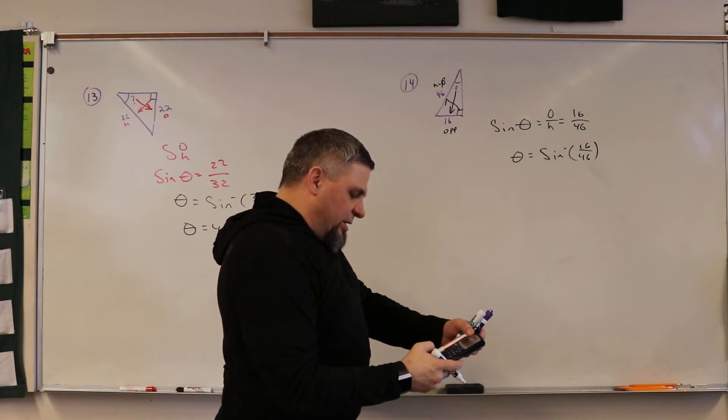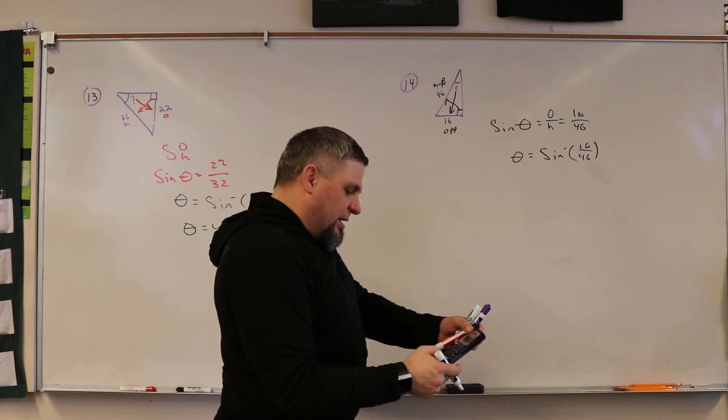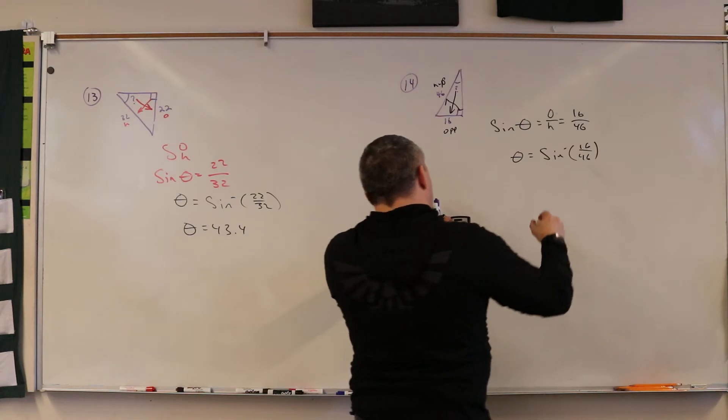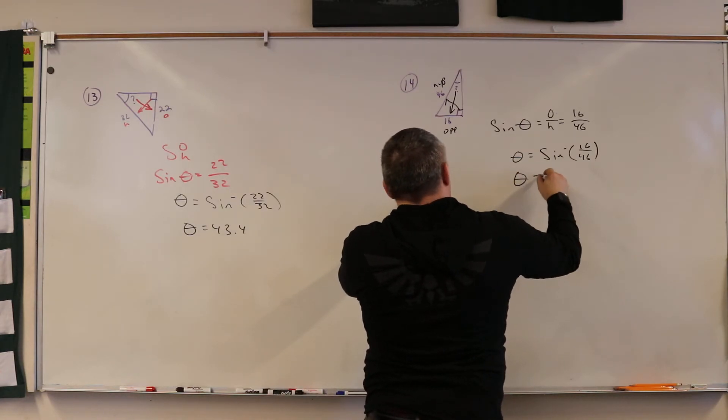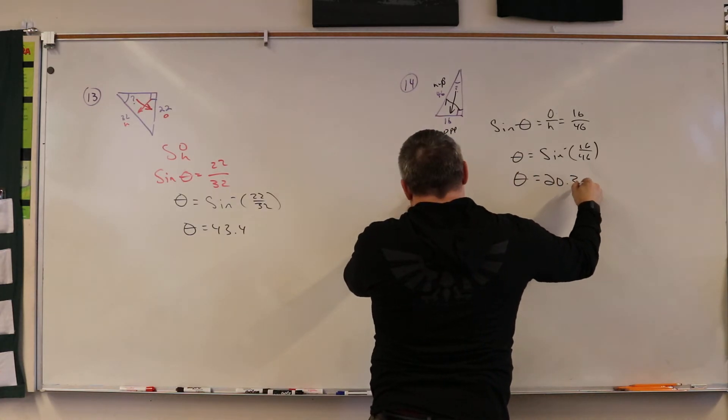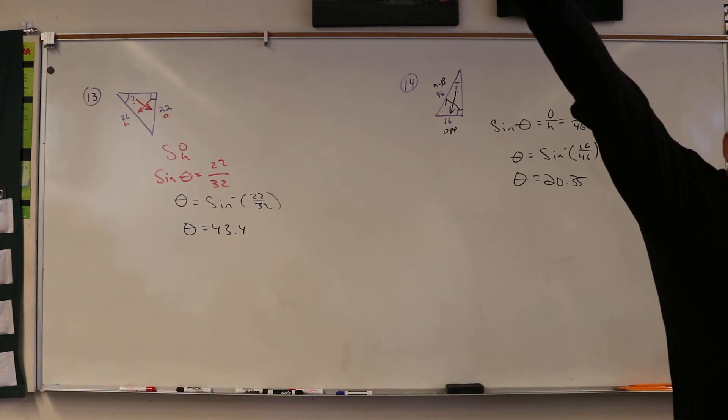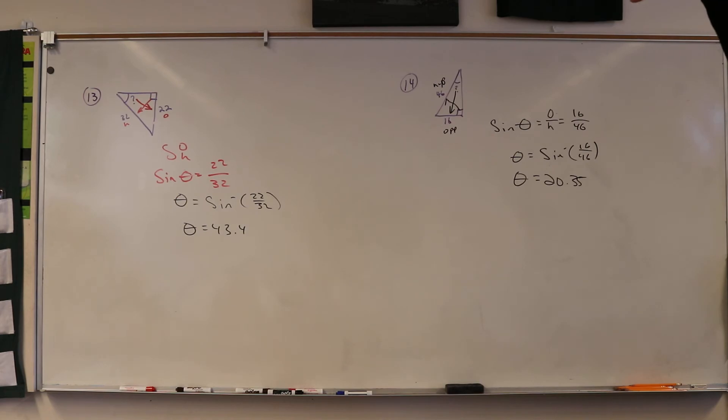Sine inverse of 16 divided by 46 equals... theta equals 20.35. And that's it.